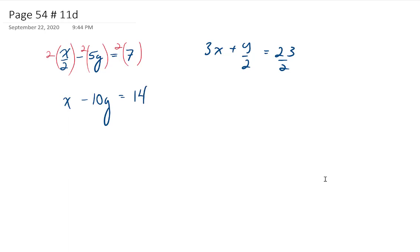Same with the second equation. I'm going to multiply everything by 2 to get rid of the fractions or to rewrite the expression without fractions. And I end up with 6x plus y equals 23. So these will be our equations a and b.